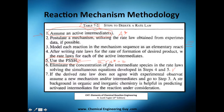If the derived rate law does not agree with the experimental observation, it doesn't work. Science works this way — experimental observation comes before theory. So you assume a new mechanism or new intermediates and start all over. Good luck with that.